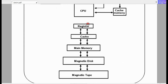Let us see the memory hierarchy. The top level is registers, the next level is cache, the third level is main memory, and the fourth level is magnetic disk and magnetic tape. If you see the first four blocks — one, two, three, four — these four are present in the computer itself, whereas magnetic tape is present outside the computer. Once you store data you can remove the tapes; this is used for long-term storage purposes. Magnetic disk is also present inside the computer.